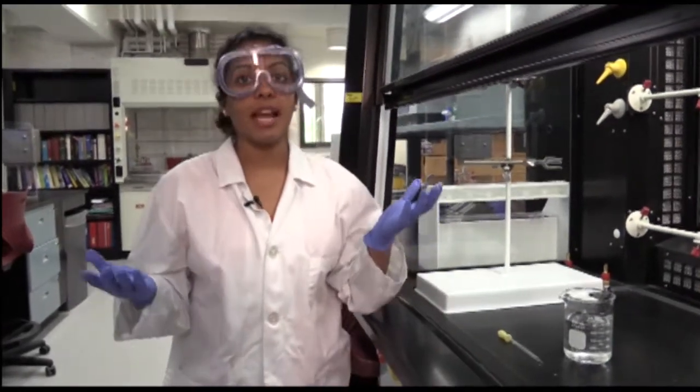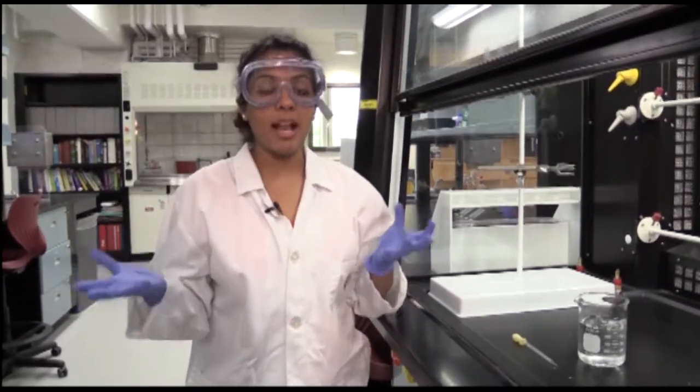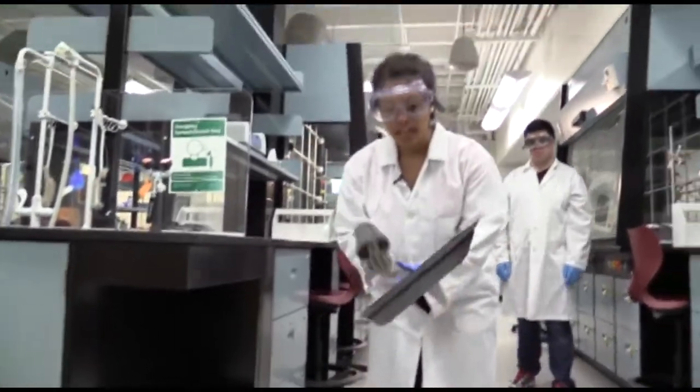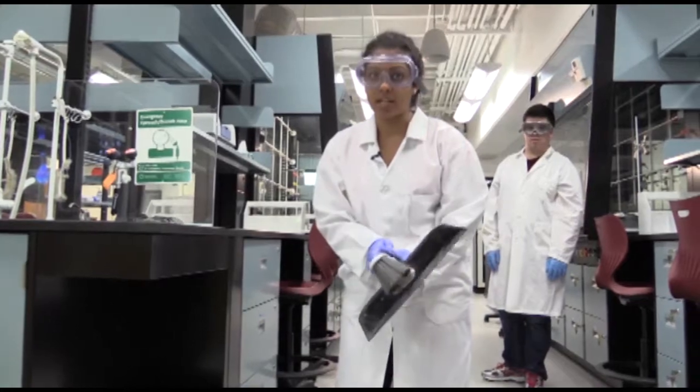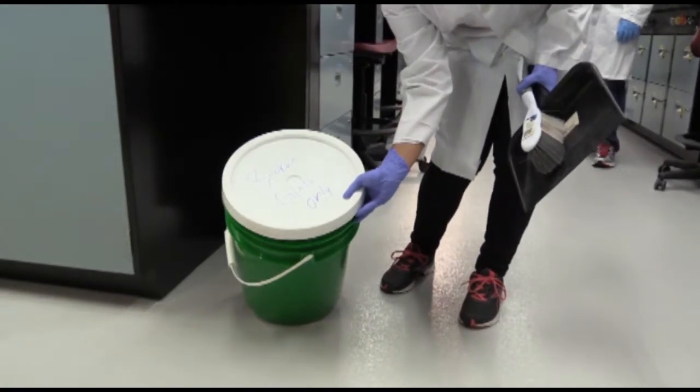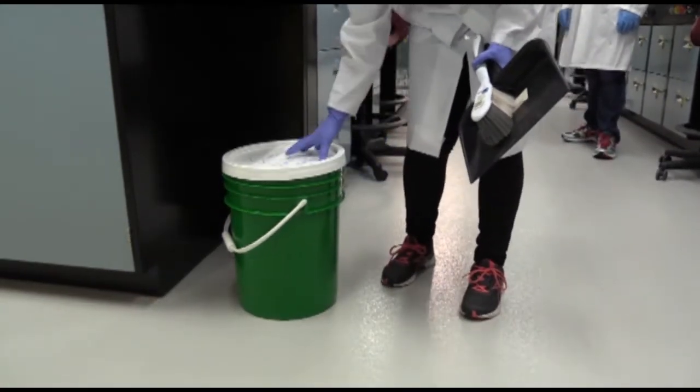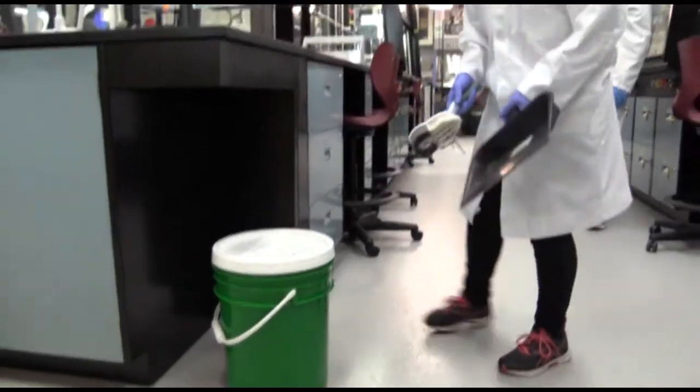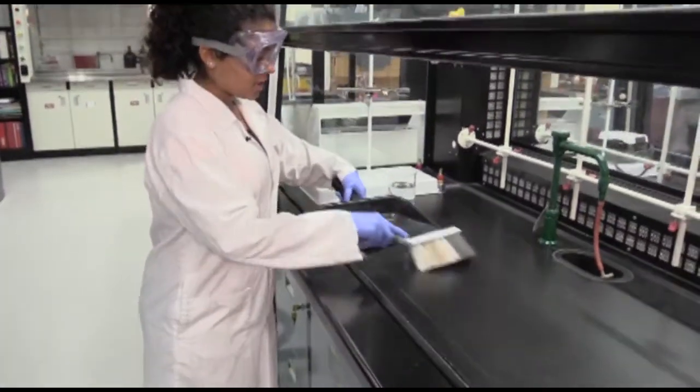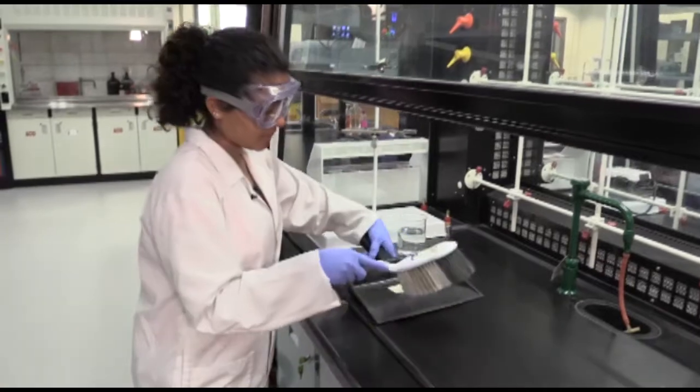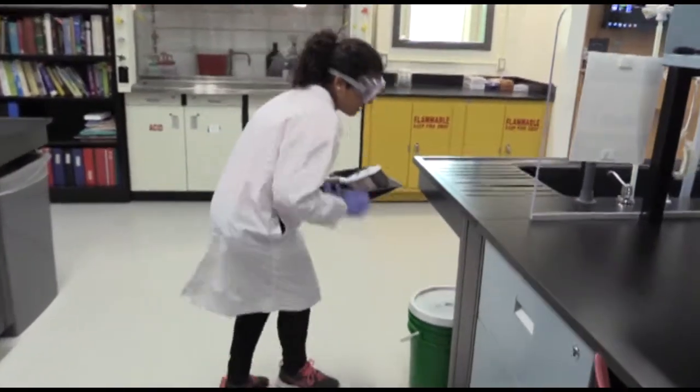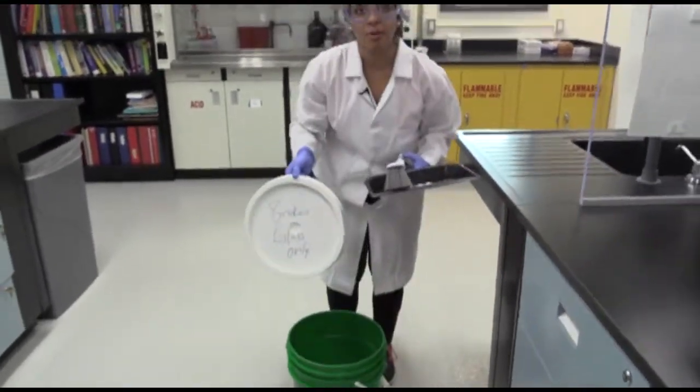If you do break something, like I said, approach your TA or instructor and they will help you clean it up. Over here, we have a dustpan and a little broom and you're going to use this to clean up broken glass. This green bucket here says broken glass only. When you break something, you've got to put the broken glass into this bucket. So, when there's broken glass, you've got to clean it up and then it goes into the broken glass bin. Like I said, broken glass.